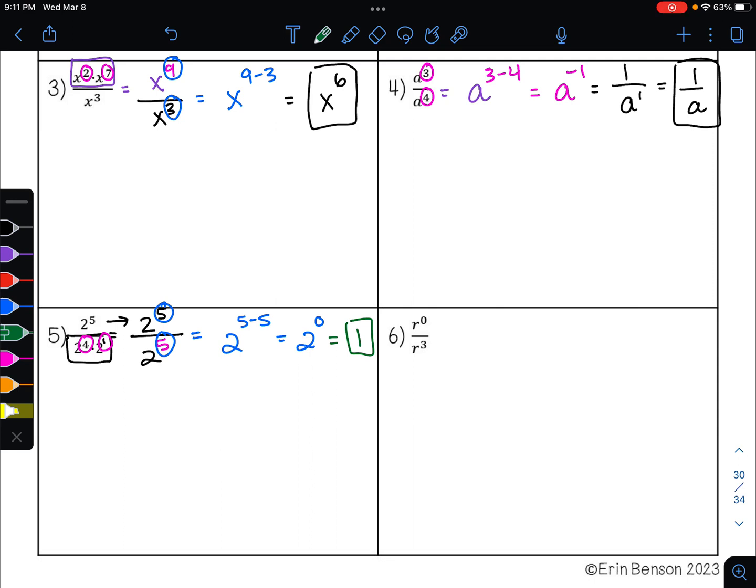On number 6, we have a quotient. So r to the 0th power divided by r cubed. There's two different ways that you could look at this problem. You could say, okay, anything raised to the 0th power is 1. So my answer is 1 over r cubed.